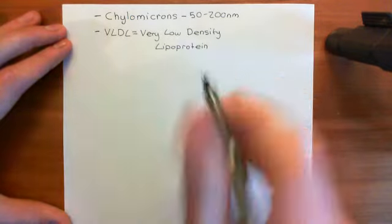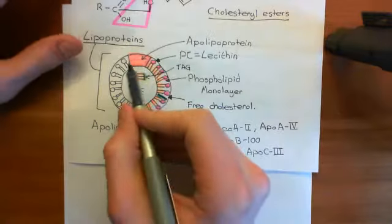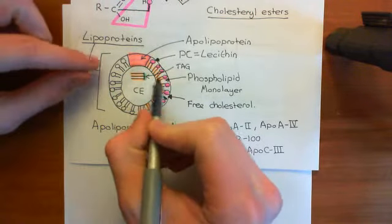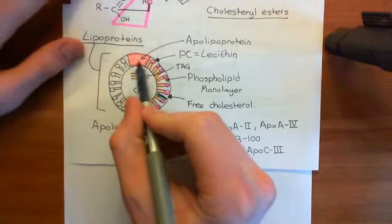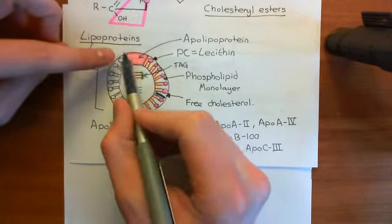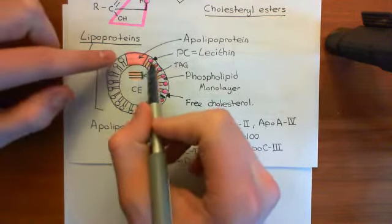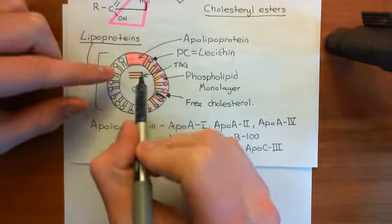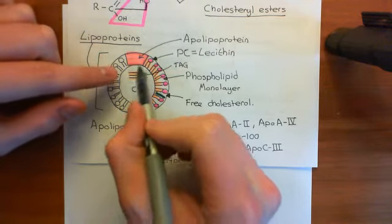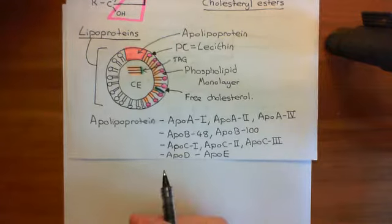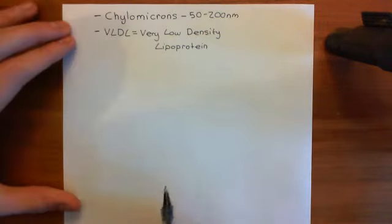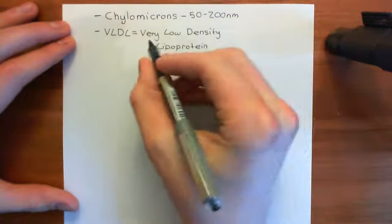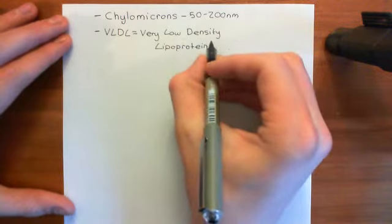If you have one little apolipoprotein in the phospholipid monolayer and a huge number of phospholipids, that is a very low density lipoprotein — very little protein compared to lipid. If instead you had absolutely loads of proteins and very little lipid, that would be a high density lipoprotein. So it refers to the ratio between the protein component and the lipid component. Very low density lipoproteins have a lot of lipid and not much protein, with diameters ranging from 28 to 70 nanometres.